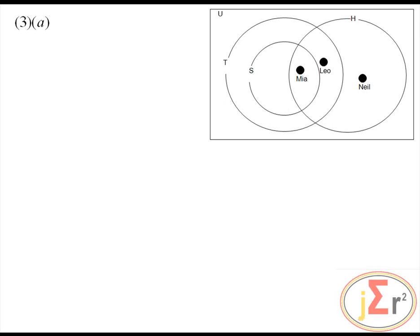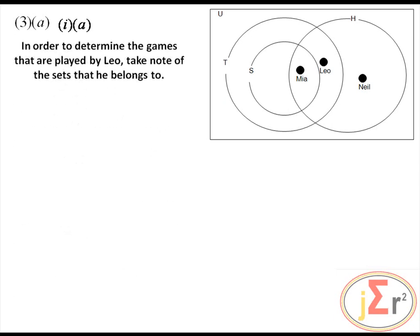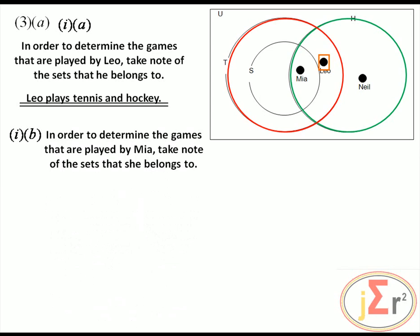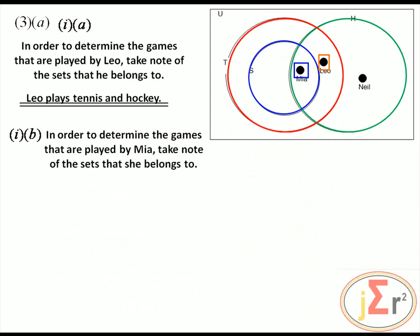S represents the set of members who play squash, T represents those who play tennis, and H represents those who play hockey. Leo, Mia, and Neil are three members. Leo is located in the intersection of hockey and tennis circles, so he plays hockey and tennis. Mia belongs to sets S and T, so she plays squash and tennis.